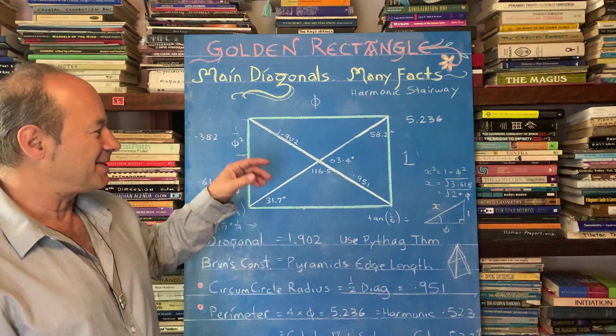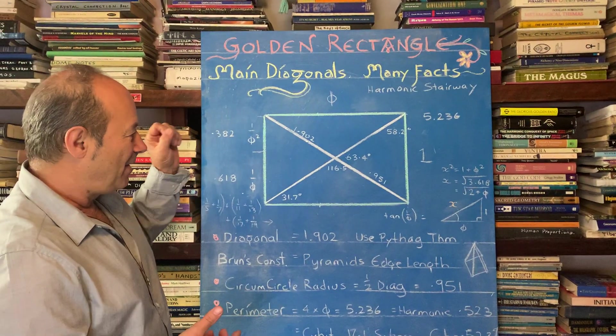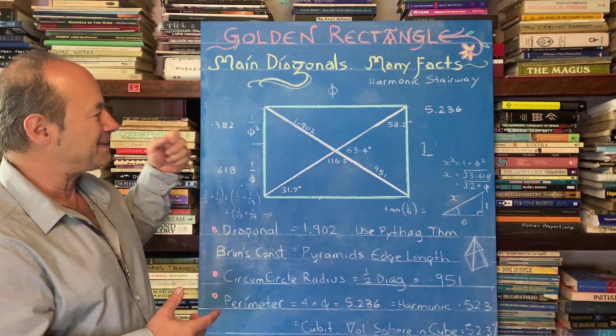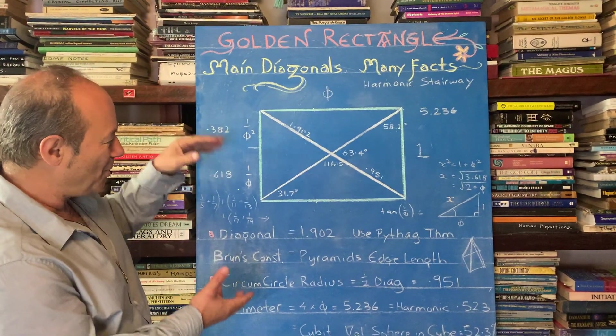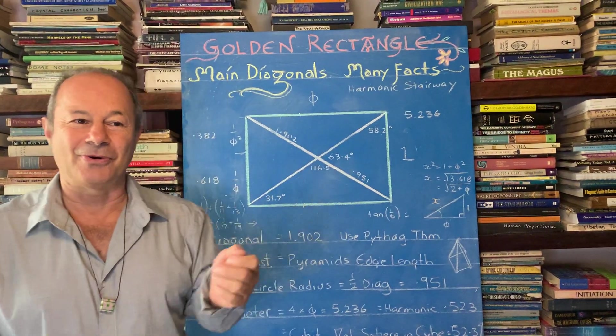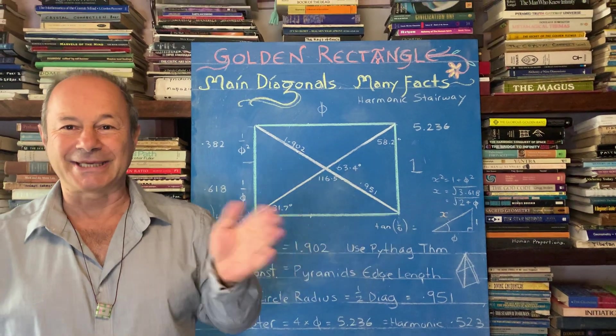And the reason why I'm showing you this is that this is an example of where lots of harmonic numbers appear. I like to index and organize all this knowledge into what we call a harmonic stairway.